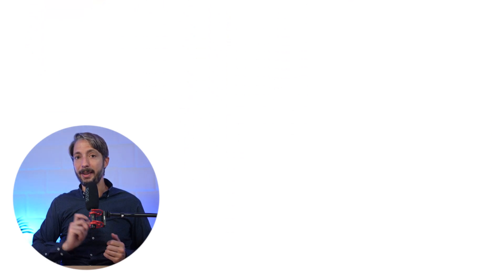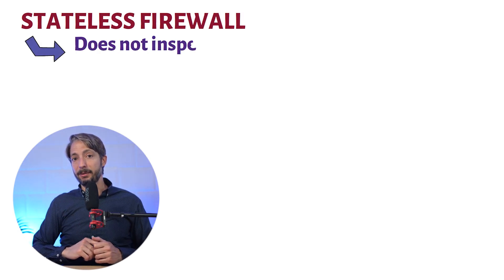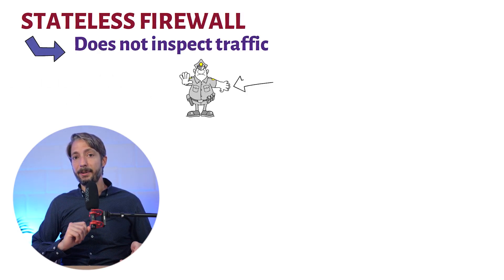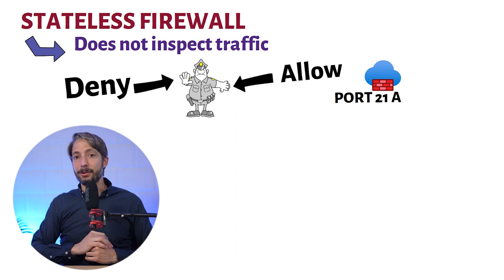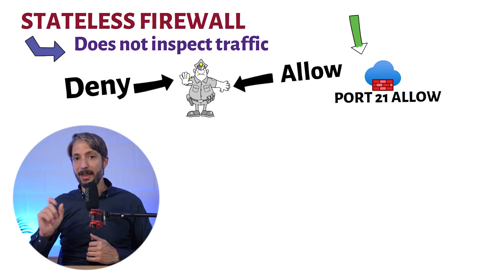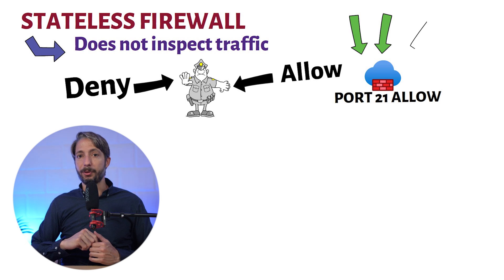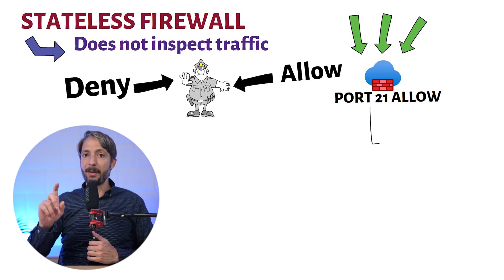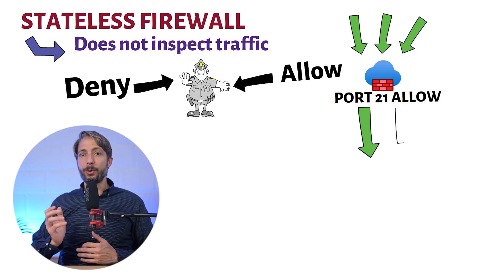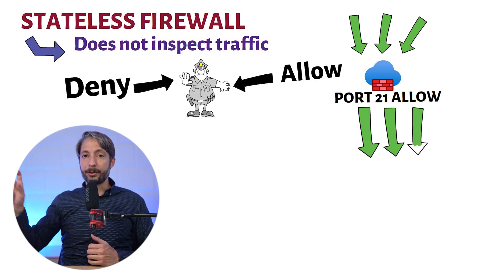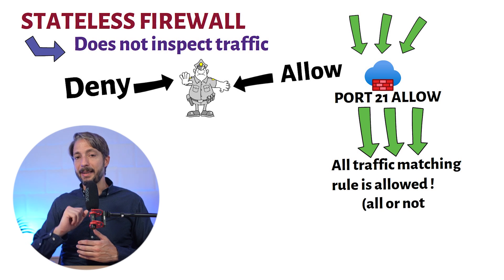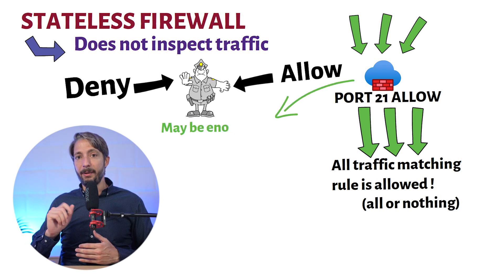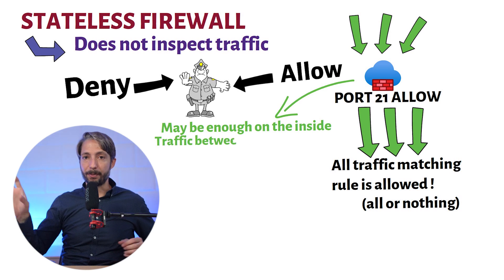A stateless firewall is another type of firewall. This one does not inspect traffic — it just determines if the security rules are met and then allows or denies. You do require more configuration as every action has to be defined in the firewall itself. In the previous example of a brute force attack, a stateless firewall would not care about this. It would only map each connection to an existing rule — allow or deny. Stateless firewalls may be enough on the inside when used for traffic between corporate networks.